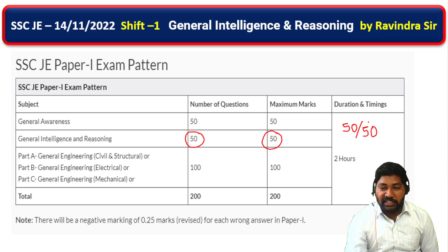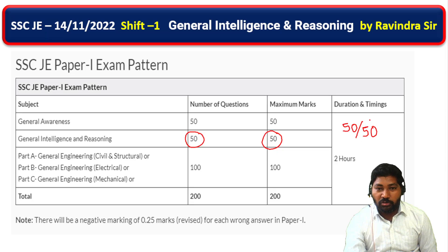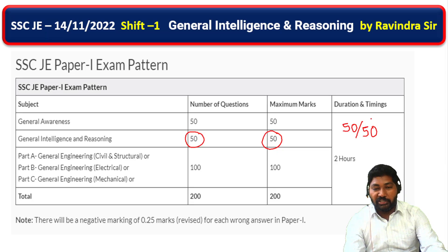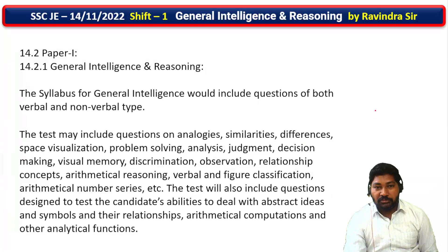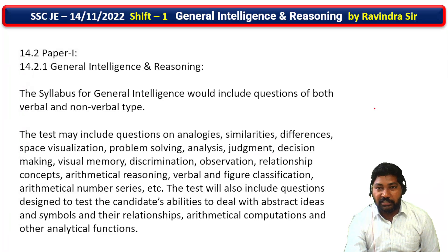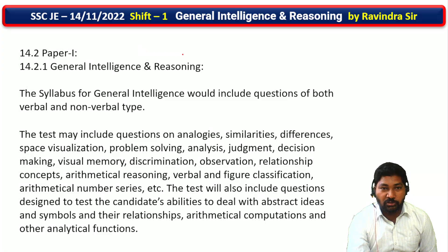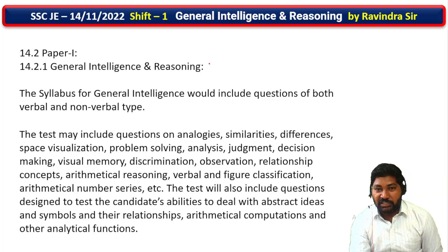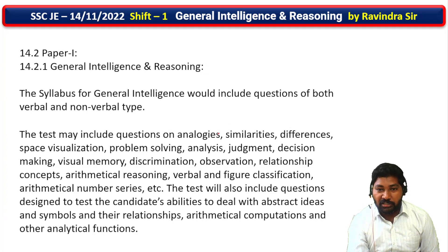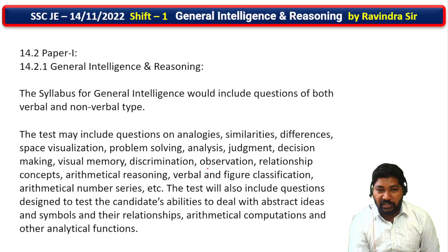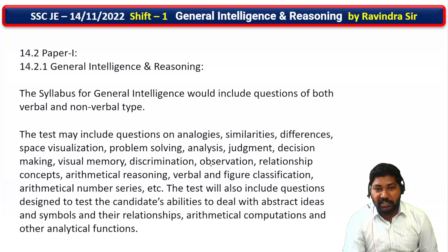The topic is very easy and scoring, but it is very difficult time to solve. The syllabus for general intelligence and reasoning includes: analogies, similarities, differences, spatial visualization, problem solving, judgment, decision making, visual memory, and paper folding motion. The first topic — detail matches.